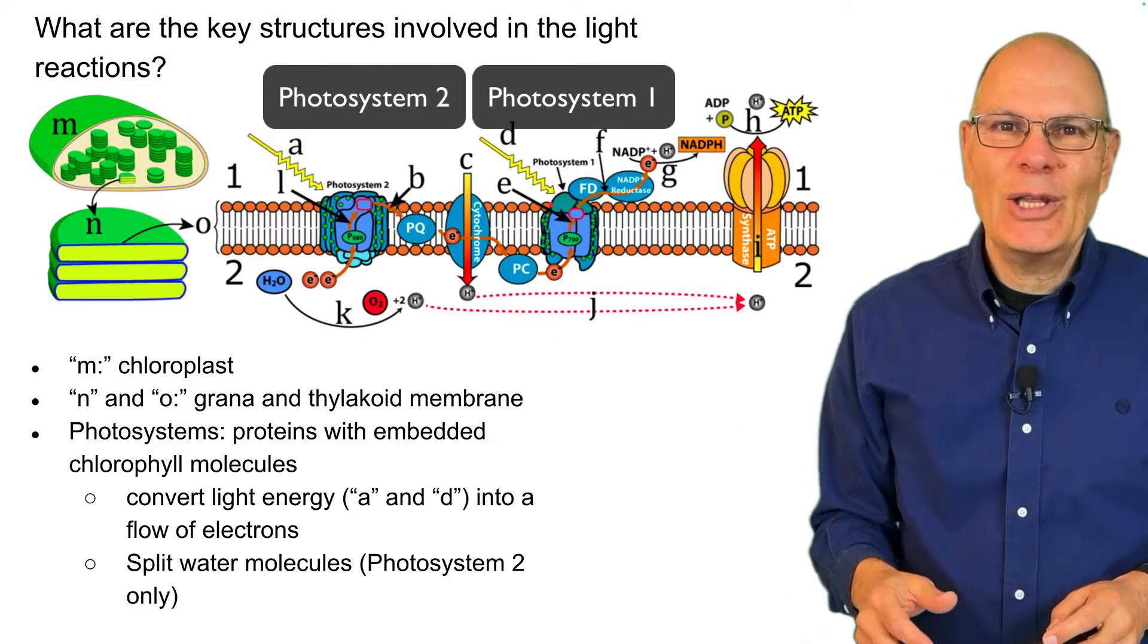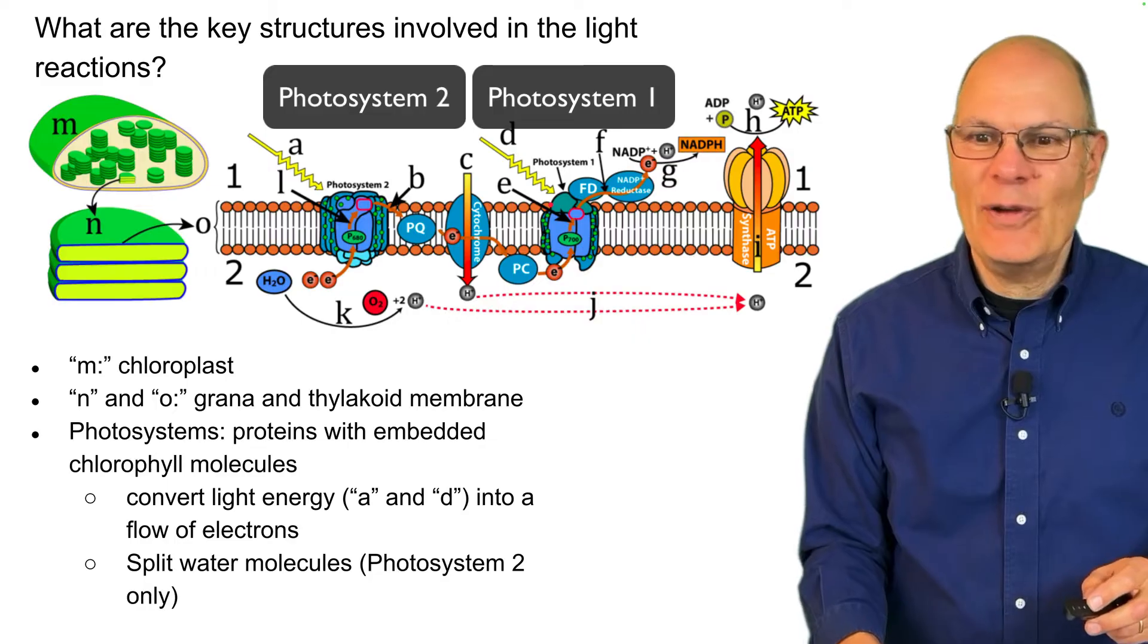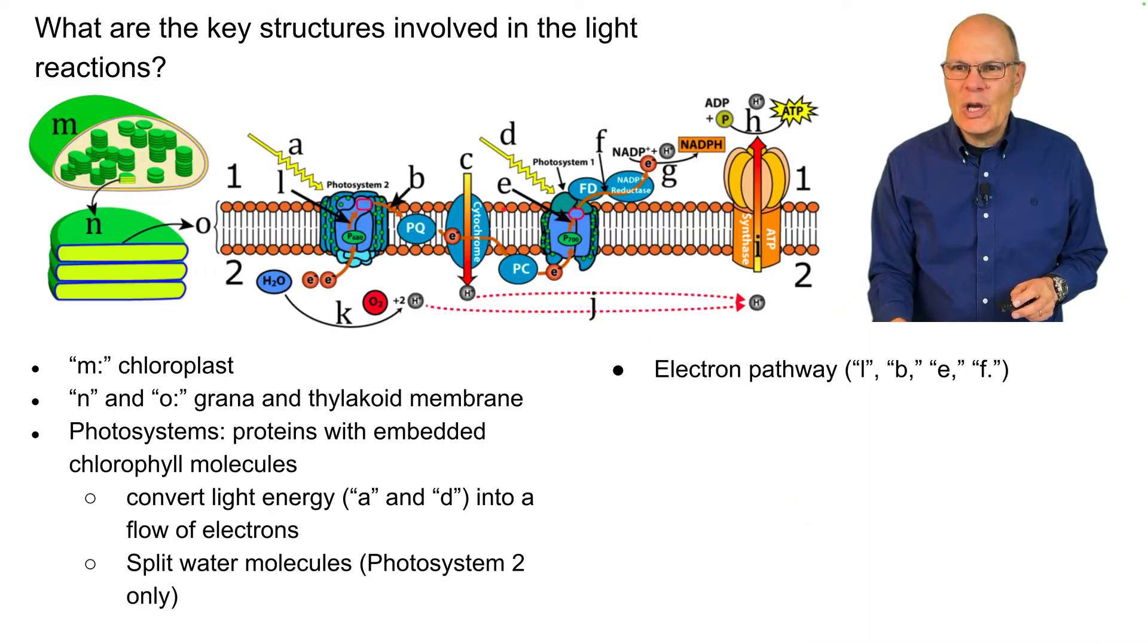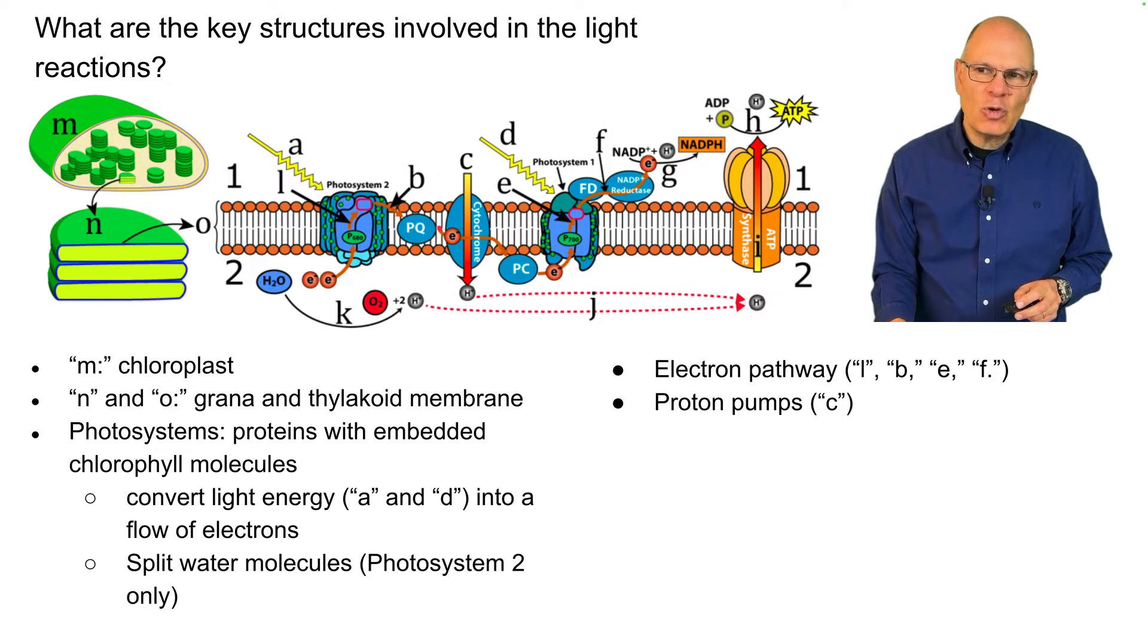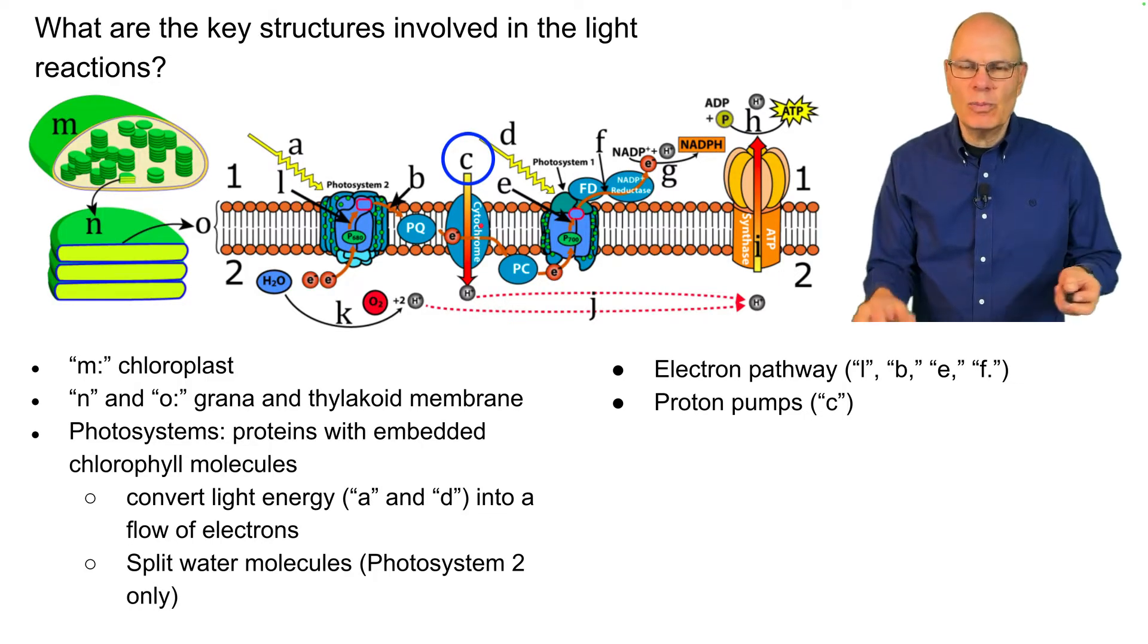For years biology students have been memorizing that, and you have to memorize it too. This is the electron pathway through which electrons flow. And at one point those electrons flow through proton pumps. They're labeled as cytochromes, but there's other stuff going on too. And what these do is they pump protons from the stroma into the thylakoid space.